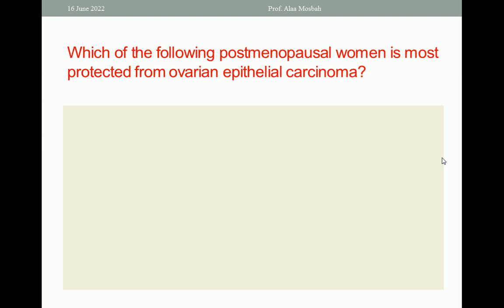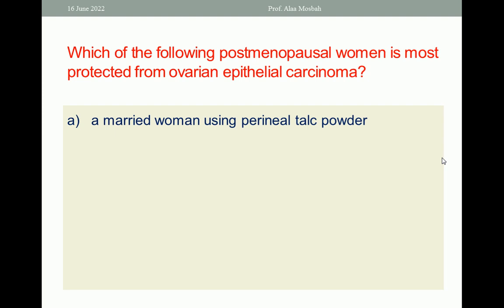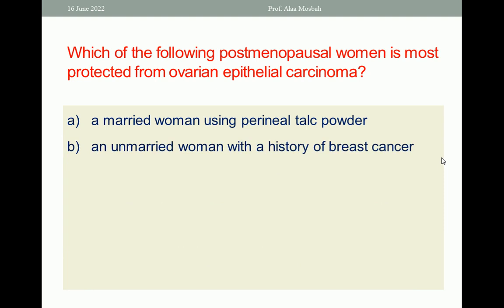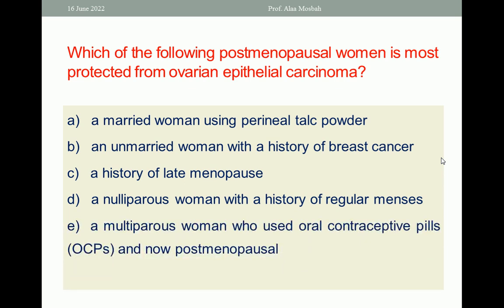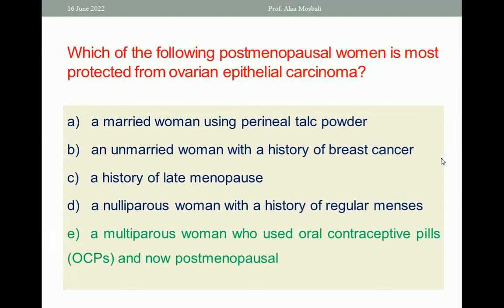Which of the following postmenopausal women is most protected from ovarian epithelial carcinoma? A. A married woman using perineal talc powder; B. An unmarried woman with a history of breast cancer; C. A history of late menopause; D. An unmarried woman with history of regular menopause; E. A multiparous woman who used oral contraceptive pills and is now postmenopausal. The one best response is E, because multiparity is protective and suppression of ovulation using combined oral pills is also protective, decreasing the risk of ovarian cancer.